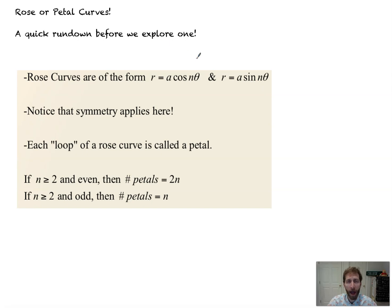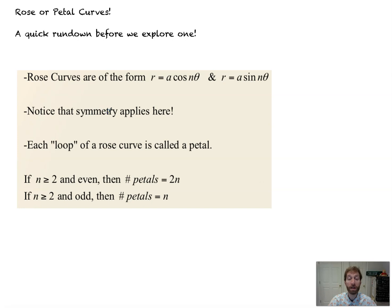Just a real quick rundown before we explore what an exact graph looks like. Rose curves are of the form A·cosine(nθ) and A·sine(nθ). Symmetry also applies here: if we have a cosine graph, we're going to be symmetric about the x-axis. A sine graph is going to be symmetric about the y-axis. If you're unsure what I mean about the symmetry, look back at video one of this same lesson.